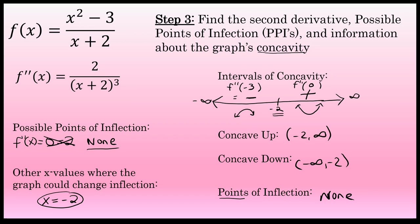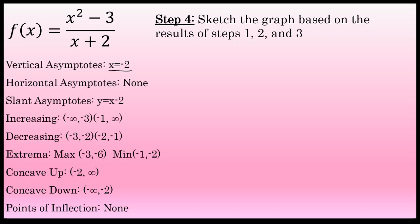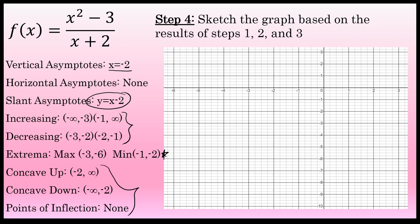The first three steps have provided a lot of information: there's a vertical asymptote at x equals negative 2 and a slant asymptote at y equals x minus 2; I know the intervals where the function is increasing and decreasing, the relative extrema, and the graph's concavity. On a coordinate plane, I'll first express the vertical asymptote as a dotted line at x equals negative 2 to help sketch the graph.